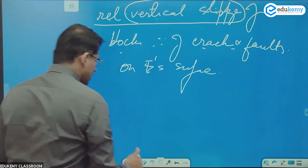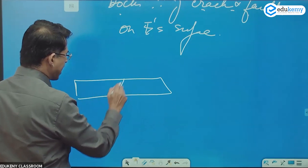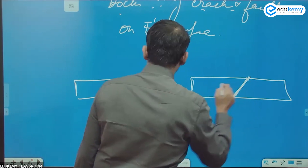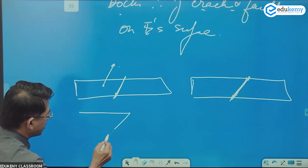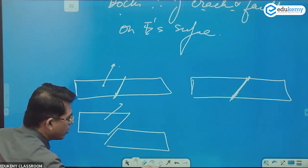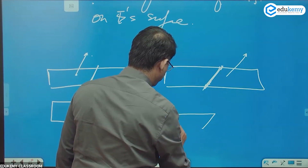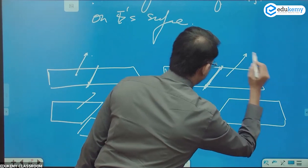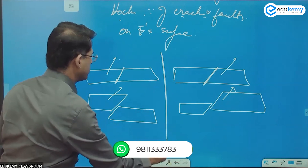So this is the Earth's surface and there is a crack. What can happen is this block can go up — it can slip above — and it becomes something like this. This block has gone above.